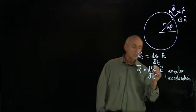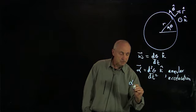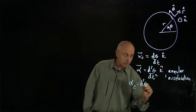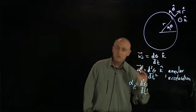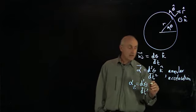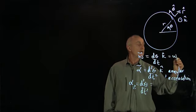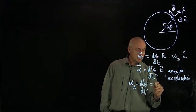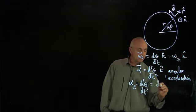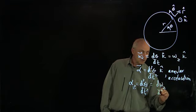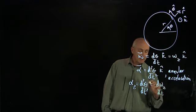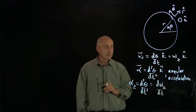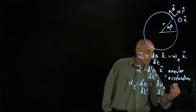Now we'll describe the component α_z as d²θ/dt², so it's the second derivative of the angle. And also, if we wrote this as ω_z k̂, we can write that as the derivative dω_z/dt as well. So this is the component.